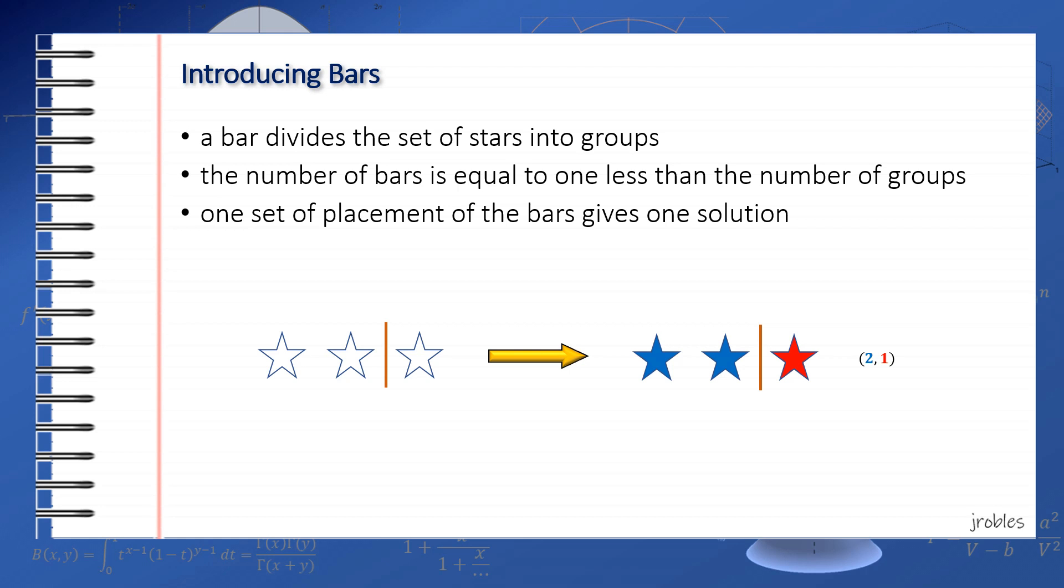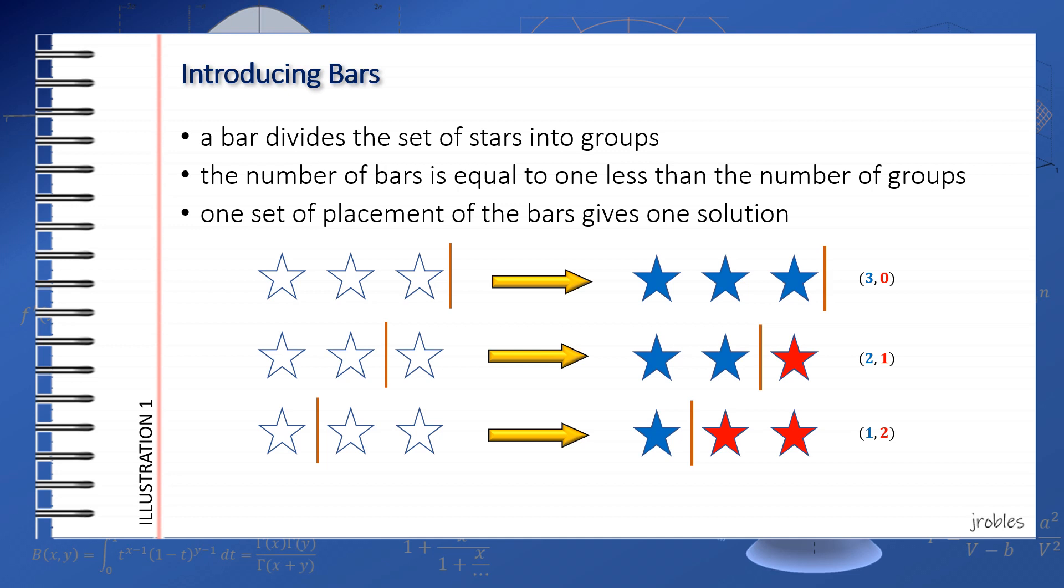In terms of bars, we can have the other solutions which we found earlier by placing the bar elsewhere. By placing it at the end of the 3 stars, we have the solution (3,0). If we place it between the first and second, we have the solution (1,2). And lastly, if we place it at the front, we have the solution (0,3). This gives a total of 4 solutions.